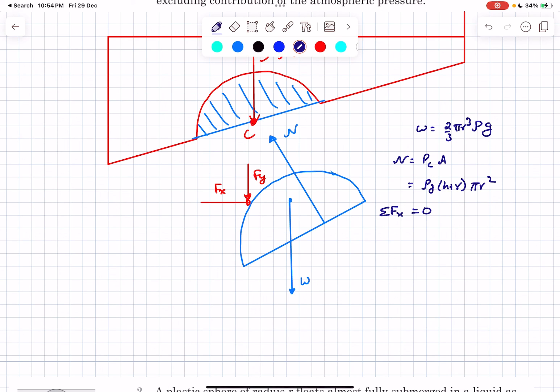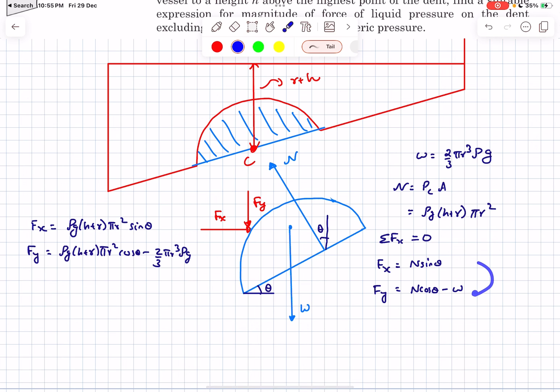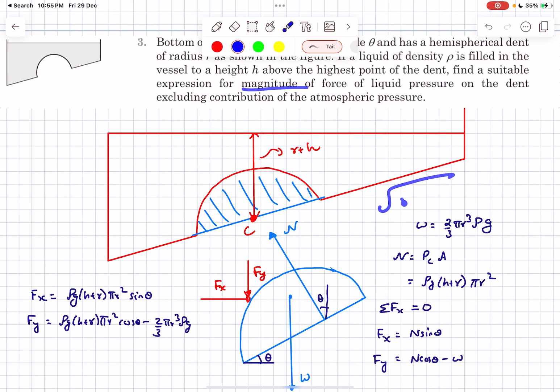Now as we know that this is in equilibrium, we can write ΣFx = 0. The base of the vessel makes an angle θ with the horizontal, meaning the normal makes an angle θ with the vertical. With this, we can write Fx = N sin θ and Fy = N cos θ - W. After solving these two equations, you'll obtain Fx and Fy as these particular values. To obtain the magnitude, you do square root of Fx² + Fy².